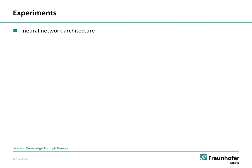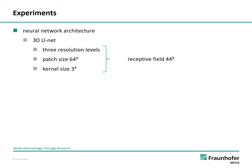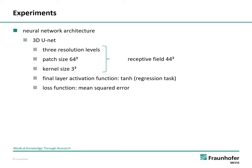For our experiments we need a neural network and data to train and validate it. We chose a 3D U-Net as the baseline architecture — a convolutional neural network with three resolution levels, a patch size of 64 cubed, and a kernel size of 3 cubed. These parameters set the receptive field to a size of 44 cubed. The 3D U-Net performs a regression task, with hyperbolic tangent as the final layer activation function, limiting the output to the desired range from minus 1 to 1. We chose mean squared error as the loss function, which is minimized during training. The learning rate is set to 10 to the power of minus 4.